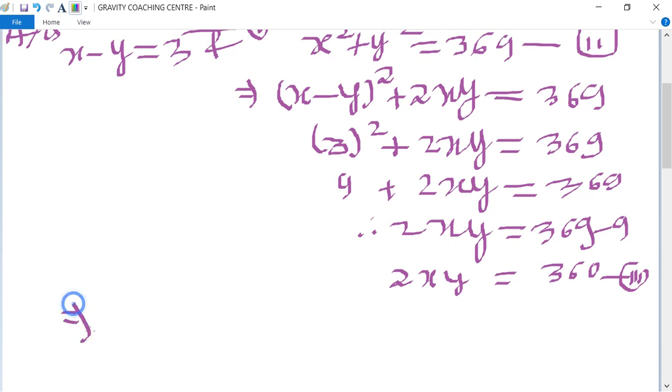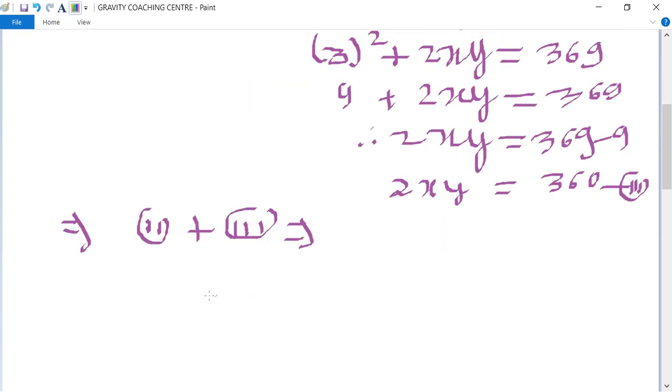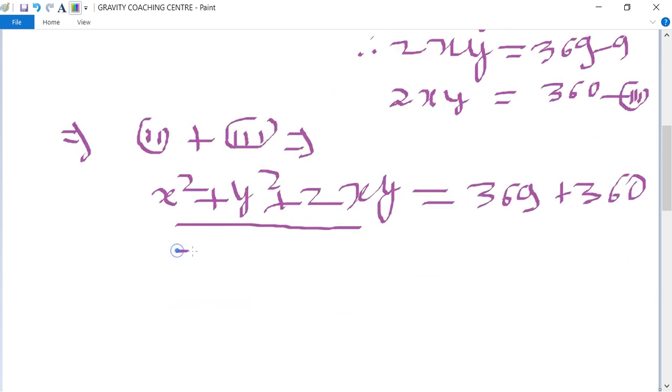Now we are adding 2nd and 3rd. So we get x squared plus y squared plus 2xy equals 369 plus 360. And it is in the form of the identity (x plus y) whole squared equals 729. So x plus y equals root 729.